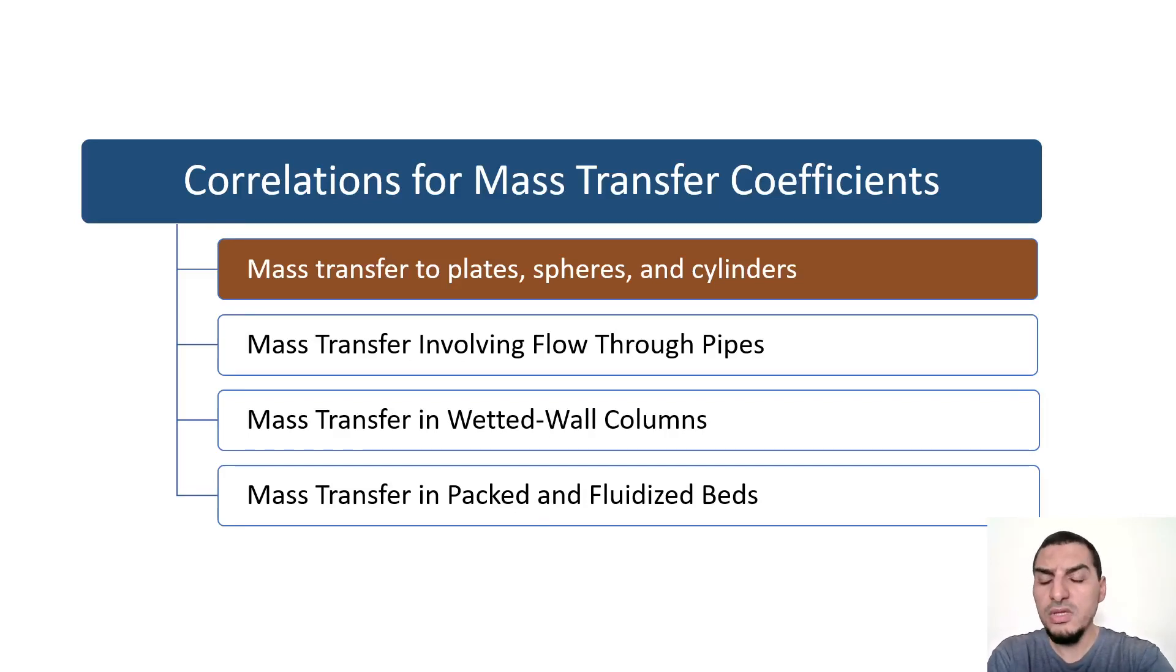Hello everybody, now we are going to start with the first class or the first section in this chapter which is related to the correlations for mass transfer coefficient for flow past or parallel to plates, normal to spheres and cylinders.